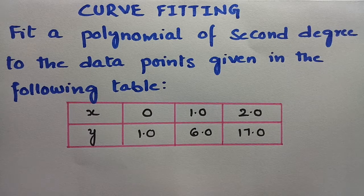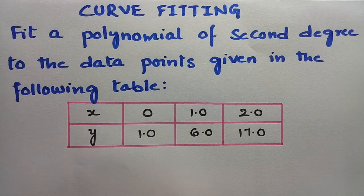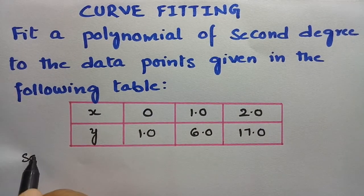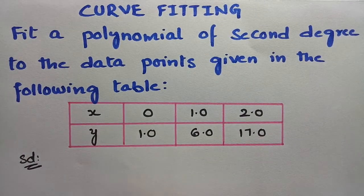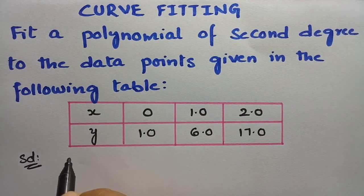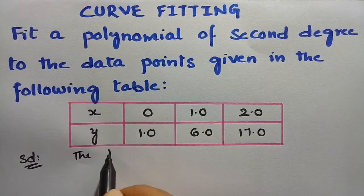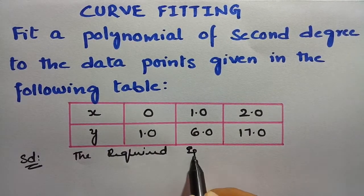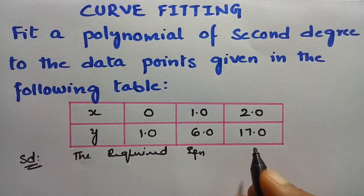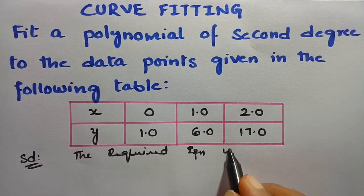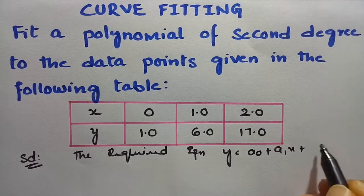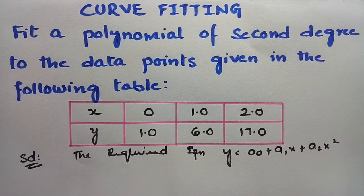We have to fit a polynomial of second degree to the data points given in the following table. x and y are given. In order to fit a polynomial of second degree, the required equation is y = a₀ + a₁x + a₂x².